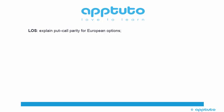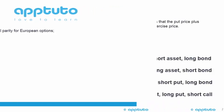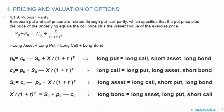This LOS explains put-call parity for European options. European put and call prices are related through put-call parity, which specifies that the put price plus the price of the underlying equals the call price plus the present value of the exercise price.